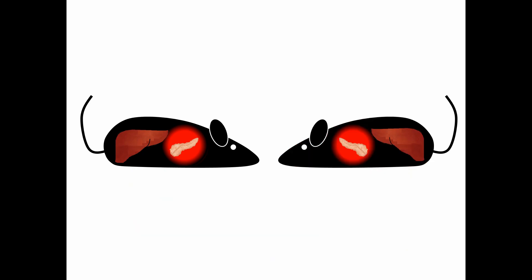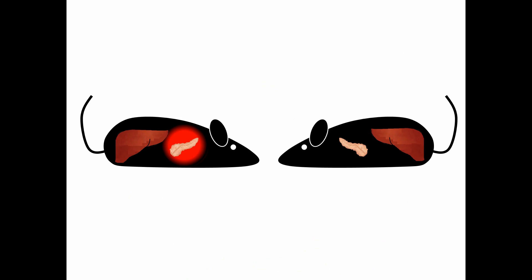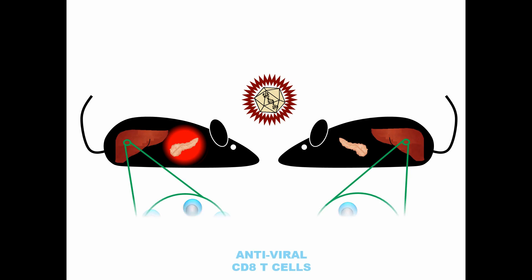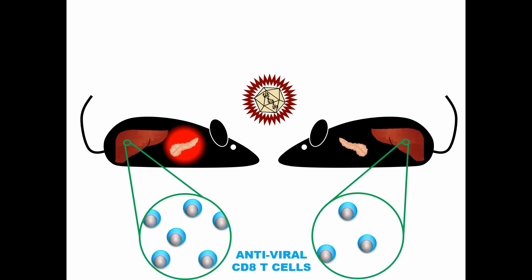Conversely, when the ability of mice to produce insulin was abrogated, viral infection resulted in lower numbers of antiviral CD8+ T cells. Thus, infection-induced hyperinsulinemia operates to boost the antiviral CD8+ T cell response.